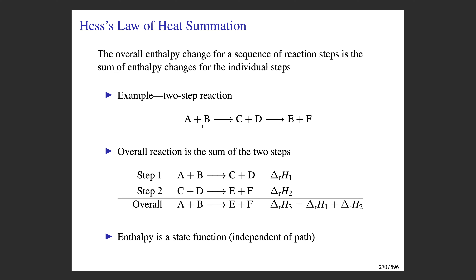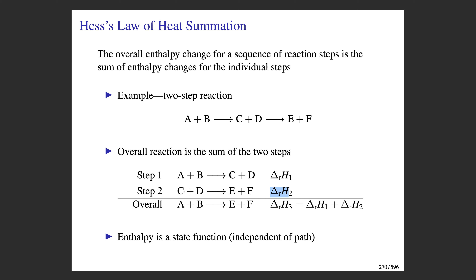In this example, we imagine going from reactants A and B to products E and F through an intermediate step involving C and D. Hess's law tells us the overall enthalpy change equals the sum of the enthalpy changes of the individual steps — delta H1 and delta H2. When you add the two equations together, the C plus D on the reactant side cancels with C plus D on the product side, giving the overall reaction. You do the same thing to the delta H values: delta H1 plus delta H2 equals the delta H for the overall reaction.